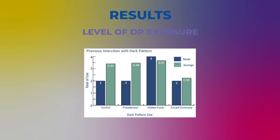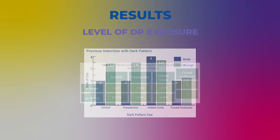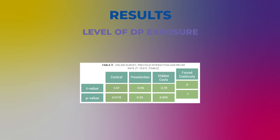Level of DP Exposure: It was hypothesized that previous exposure to DPs affects the reuse rate. Participants were most exposed to hidden costs — between once a week and every other week — and least exposed to forced continuity, at about once a month. A two-way ANOVA found a relationship between participants' level of DP exposure and reuse rate, confirming the hypothesis. However, the post-hoc test found only the control and hidden costs showed a significant relationship. For forced continuity, the averages for interaction and reuse were the same, resulting in a p-value of 1.